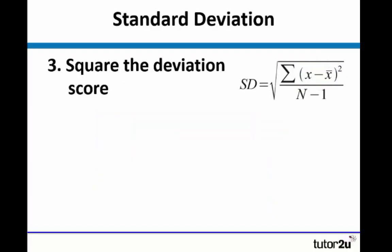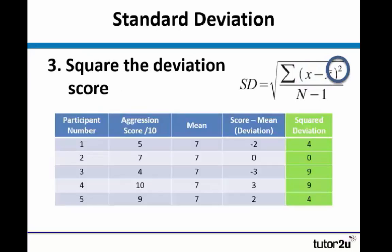The next step is to square the deviation. So the deviation, as you can see in the formula, it's circled there. The deviation simply means the score minus the mean. And we square them quite easily because these numbers are quite straightforward. So minus 2 squared would be 4. Minus 3 squared is 9. 3 squared is 9. And then 2 squared is 4.